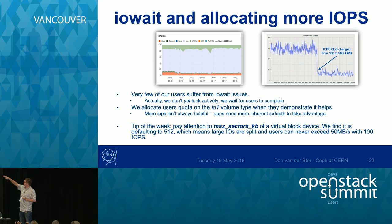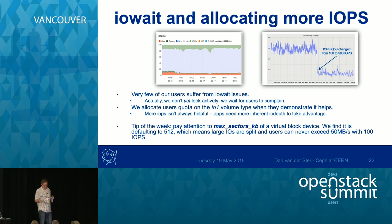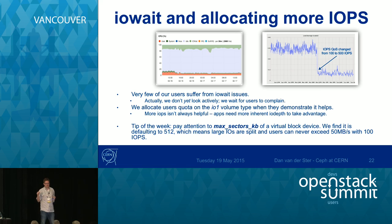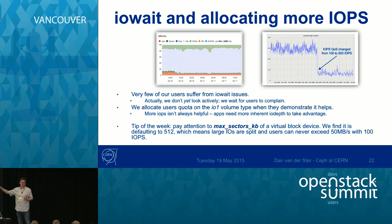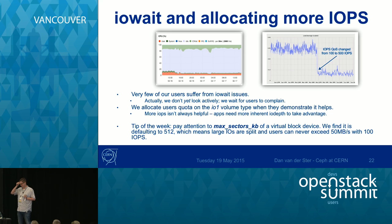A tip if you decide to throttle IOPS on your volumes: watch out for max_sectors_kb, a property of block devices in Linux. By default it's 512 kilobytes. If you throttle a block device to 100 IOPS and the Linux kernel is splitting your IOs into 512KB chunks, you're artificially limiting the block device to 50 MB/s. This took us a while to figure out. In newer kernels, the detection of max_sectors_kb has changed, but if you run RHEL 6 or even RHEL 7, it's still like this.